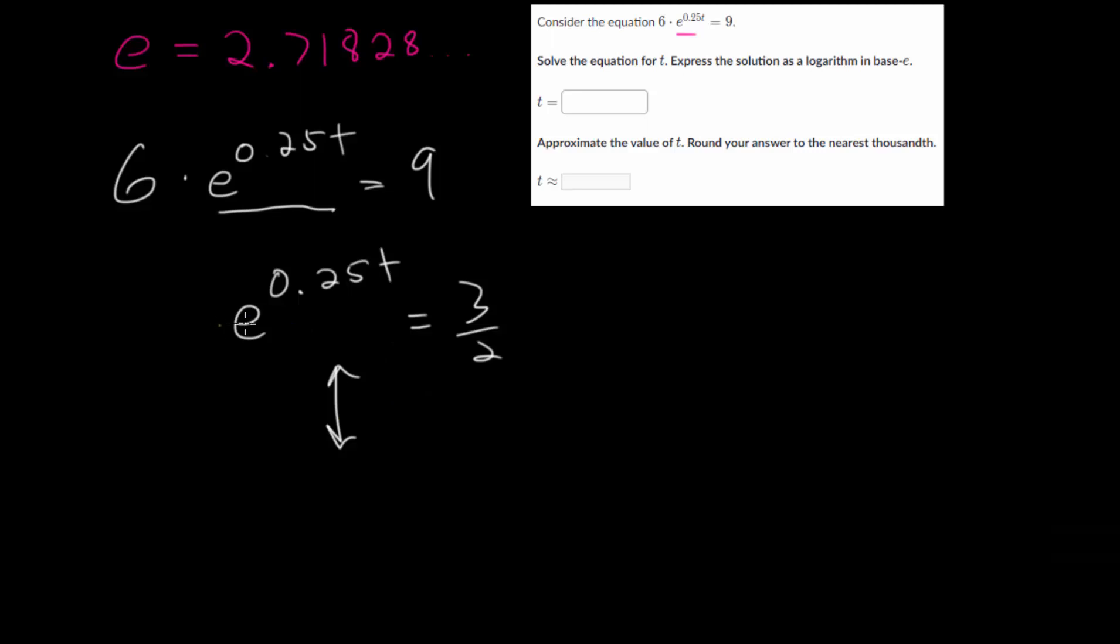And now this is solved for our exponential term. So we can rewrite this as a logarithm. And for this logarithm, the base is E and it will be equal to whatever the exponent is. So 0.25t. And then the 3 halves will go on the inside of the logarithm. And this is a special logarithm. Any logarithm with base E, we can just rewrite as our natural logarithm. So this will be ln of 3 halves equals 0.25t.